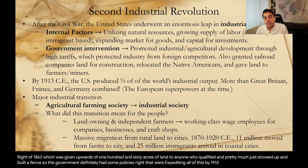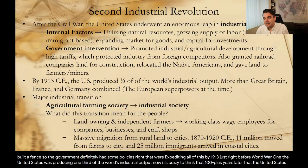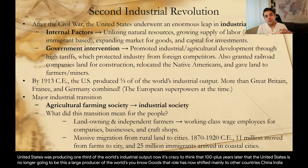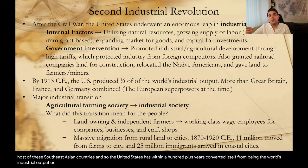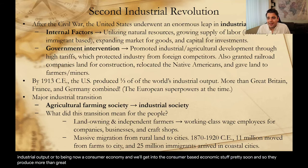By 1913, just before World War I, the United States was producing one-third of the world's industrial output. It's interesting to think that 100-plus years later, the United States is no longer this large producer of the world's goods — that role has shifted mainly to China, India, and a host of Southeast Asian countries. Within 100-plus years, the U.S. converted itself from being the world's industrial outputter to being a consumer economy. They produced more than Great Britain, France, and Germany combined.